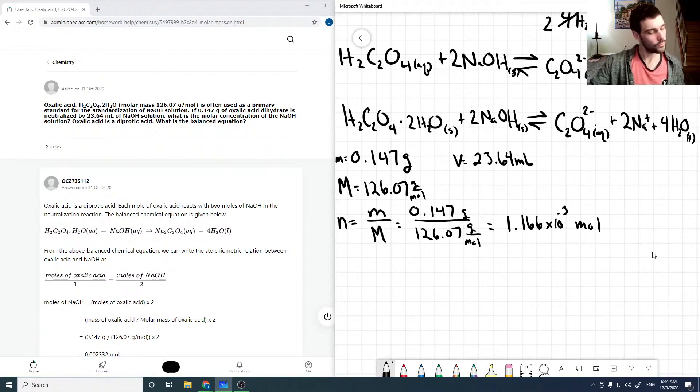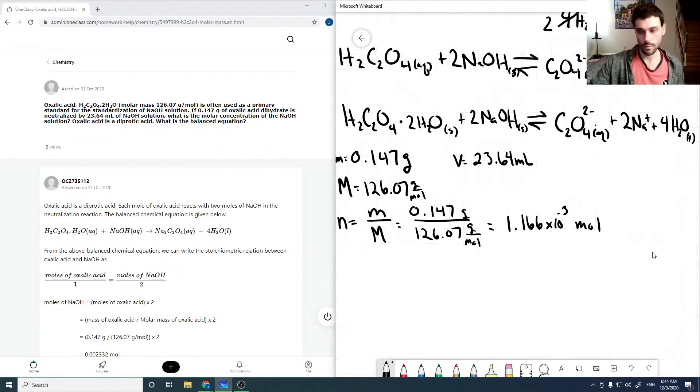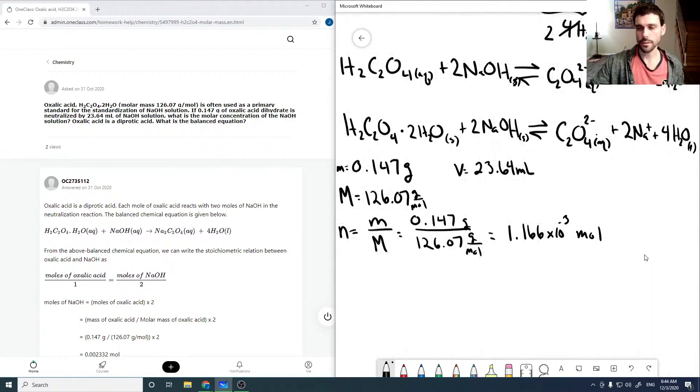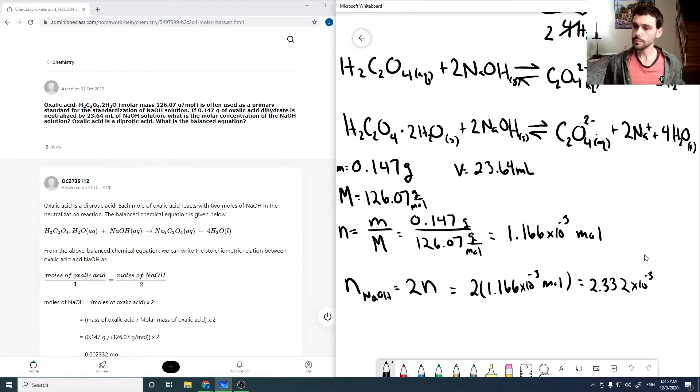And then, so if we look at our balanced equation, it takes 2 moles of NaOH per 1 mole of our oxalic acid. So that means that the number of moles of our NaOH is twice that, is 2 times this value that we just calculated. So that would be 2 times 1.166, which is 2.332 times 10 to the minus 3 moles.